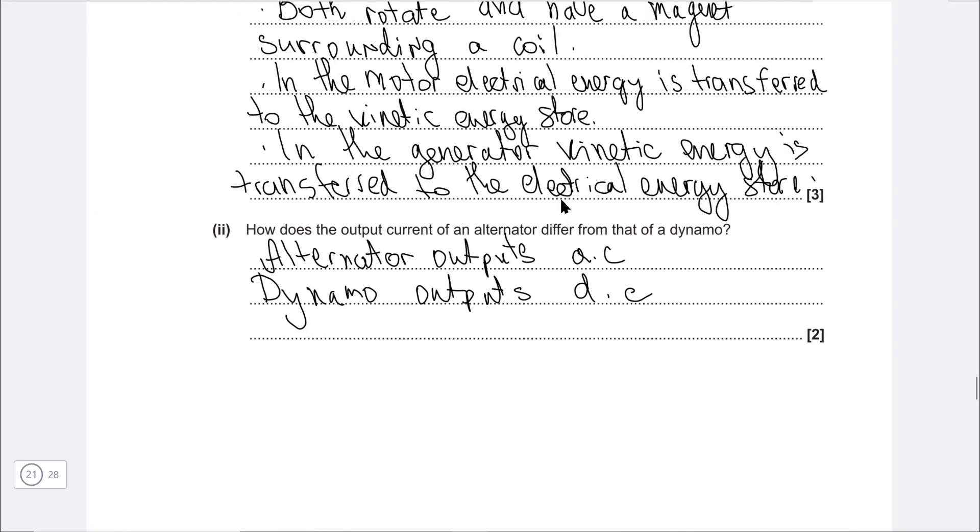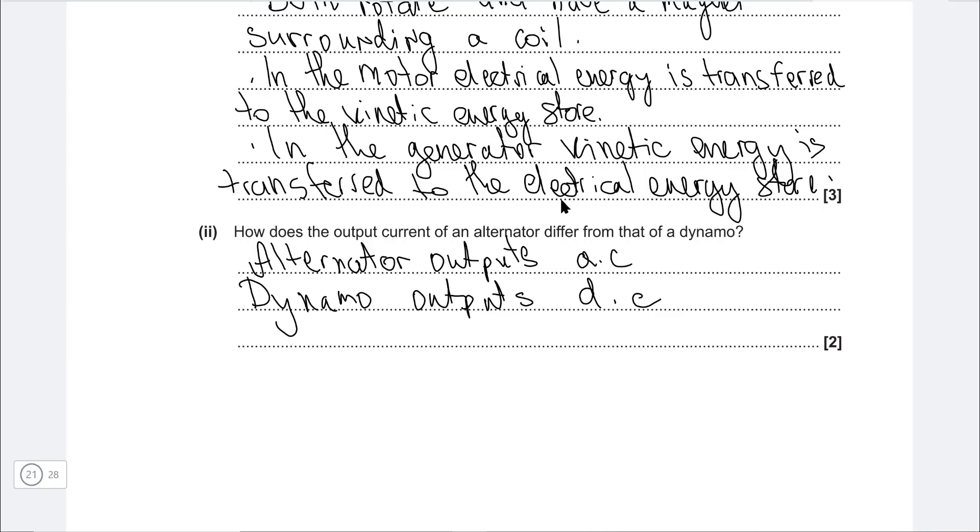Then we have another one. How does the output current of an alternator differ from that of a dynamo? Something good to remember is that the alternator outputs AC, whereas the dynamo outputs DC.